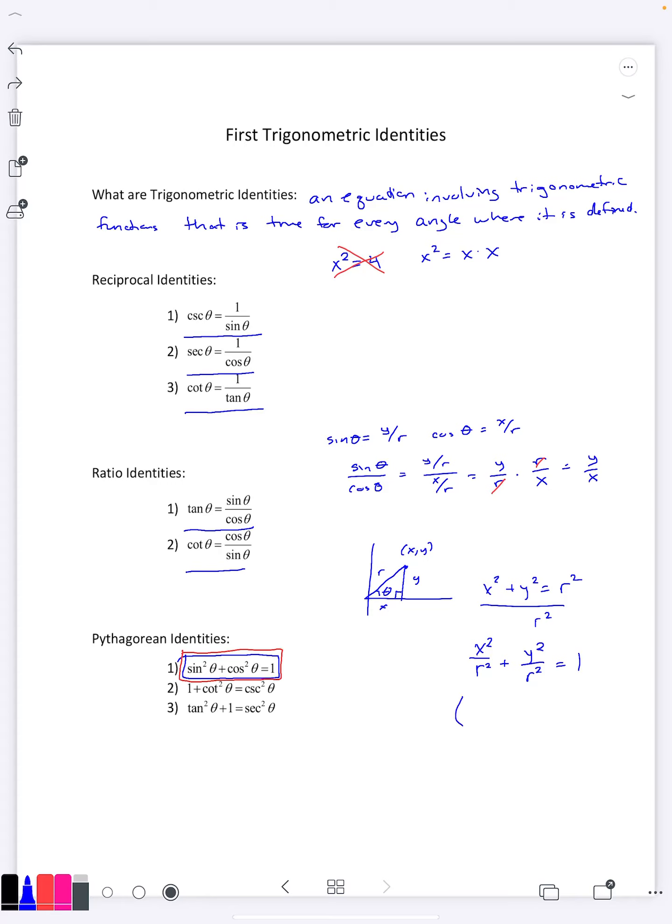Which is the same thing as saying X over R quantity squared plus Y over R quantity squared is one. And the X over R was the same thing as cosine theta, which we're squaring, plus the Y over R was the same thing as sine theta, which we're squaring. And if you switch the order, you get sine squared plus cosine squared is one. And that is our first trig identity.